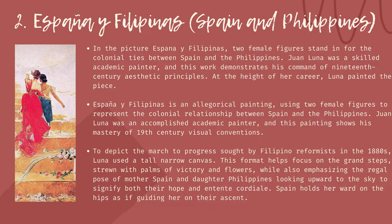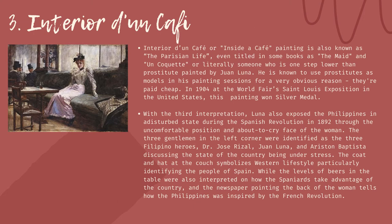Second: España y Filipinas — Spain and Philippines. In the picture España y Filipinas, two female figures stand in for the colonial ties between Spain and the Philippines. Juan Luna was a skilled academic painter, and this work demonstrates his command of 19th century aesthetic principles. It is an allegorical painting using two female figures to represent the colonial relationship. To depict the march to progress sought by Filipino reformists in the 1880s, Luna used a tall, narrow canvas. This format helps focus on the grand steps strewn with palms of victory and flowers, emphasizing mother Spain and daughter Philippines looking upward to signify their hope and intent de cordiale. Spain holds her ward on the hips as if guiding her on their ascent.